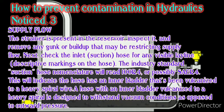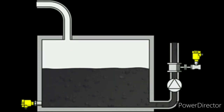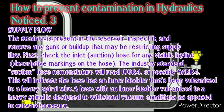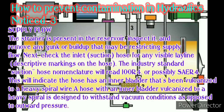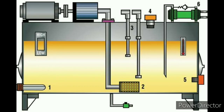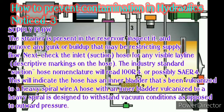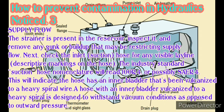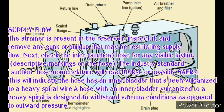Supply flow: if a strainer is present in the reservoir, inspect it and remove any buildup that may be restricting supply flow. Check the inlet suction hose for visible layer line descriptive markings. The industry standard suction hose nomenclature will read 100R4 or SAE R4, indicating the hose has an inner bladder vulcanized to a heavy spiral wire, designed to withstand vacuum conditions as opposed to outward pressure.